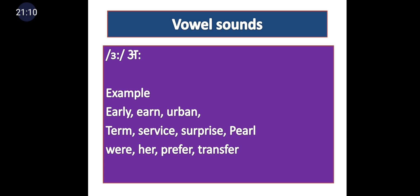Long O — the /ɜː/ sound — uses a symbol like a figure-three with a colon in the slant bar. Examples initially: early, own, urban. Medially: term, service, surprise, pole. Finally: were — not 'where,' remember — her — not 'her' with R — prefer, transfer. The R sound finally is not pronounced. Keep this symbol in mind for phonemic transcription worth four marks.